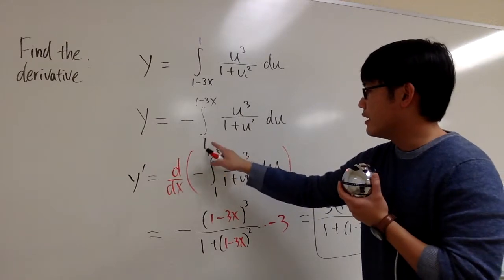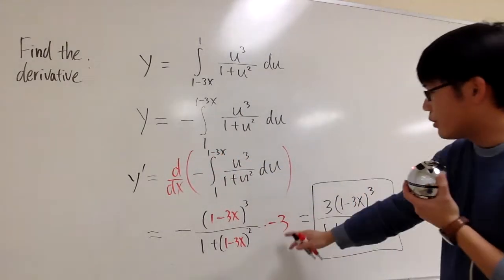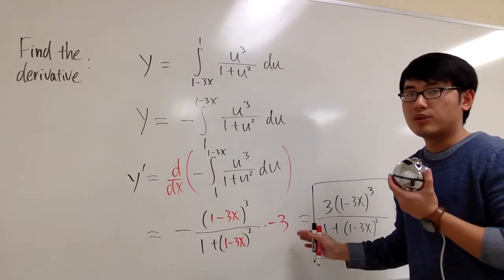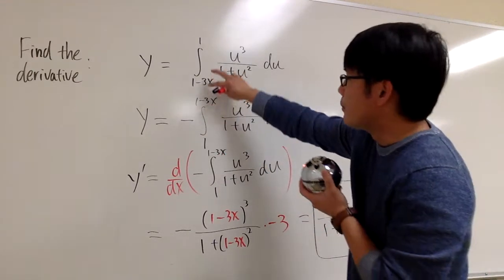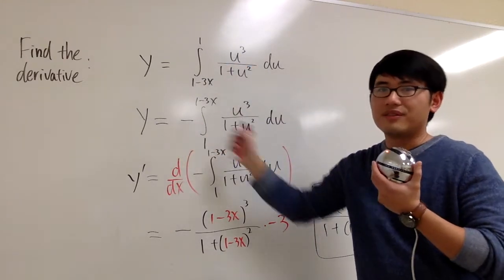Once again, plug in the expression that has x into all these variables, and multiply by the derivative of that, because of the chain rule. And make sure that when you switch the limits of integration, you change the sign. You make that negative. That's it.